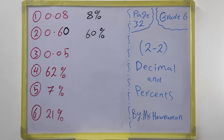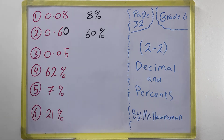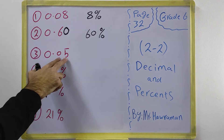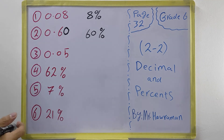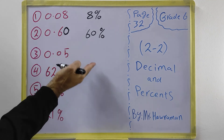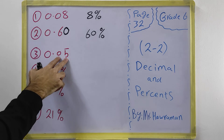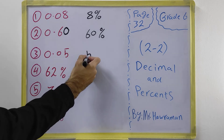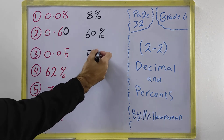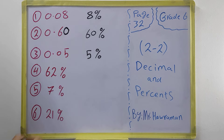The next example is 0.05. After the point we already have two digits — 05 — so we don't need to add anything. 05 means 5, so it is just 5 percent.